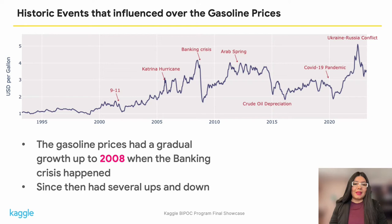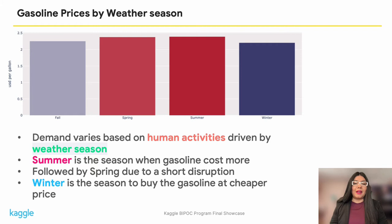This graph shows the behavior of retail gasoline prices affected by historic events such as 9/11, Hurricane Katrina, the banking crisis, Middle East instability, crude oil depreciation, the COVID-19 pandemic, and the Ukraine-Russia conflict.